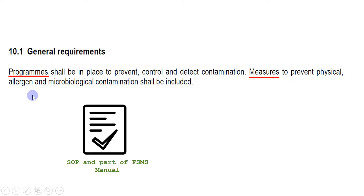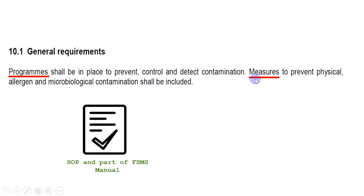The first word is 'program' and the second is 'measures.' The word 'program' indicates that this PRP should be part of a procedure and also part of the FSMS manual — FSMS stands for Food Safety Management System. The second word I highlighted is 'measures.' Wherever you see the word 'measures,' keep in mind that you need a document to comply with this clause, so you need to do monitoring and verification. I will share the relevant formats and templates needed to comply with this clause.